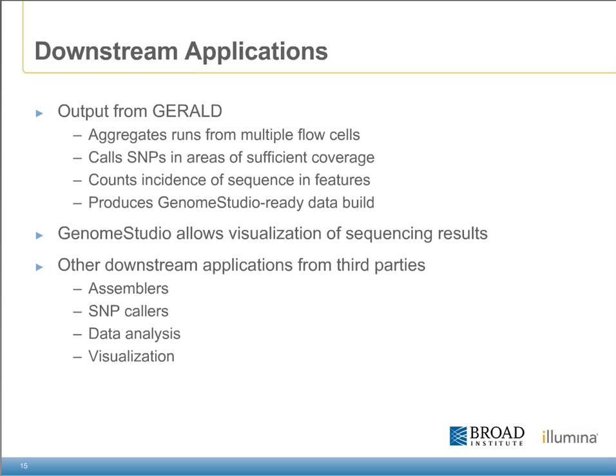The aligned output data from Gerald can be passed to further downstream applications, such as CASAVA, which aggregates runs from multiple flow cells, calls SNPs, counts indices in the case of tag-based applications, or produces Genome Studio-ready build data. An additional product within the Illumina software suite is Genome Studio, which can be used to visualize the resulting sequences from the aligned output data. Within Genome Studio, the sequence data can be combined with data from any of our array-based products to enhance the experiment or the overall output of the sequence information.